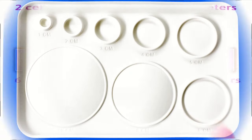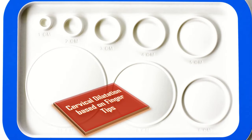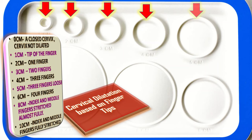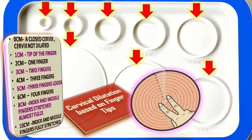Cervical dilatation based on fingertips: 0 cm means closed cervix, not dilated. 1 cm is the tip of one finger. 2 cm is one finger. 3 cm is two fingers. 4 cm is three fingers. 5 cm is three fingers loose. 6 cm is four fingers. 8 cm means index and middle finger stretched almost fully. 10 cm means index and middle finger fully stretched.